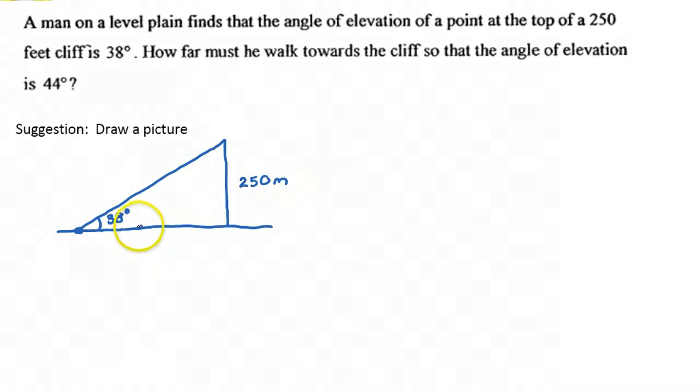So then this man walks a bit, and he ends up at a new point. And what he finds from this new point, the angle of elevation is 44 degrees. And we want to find how far he's walked towards the cliff.